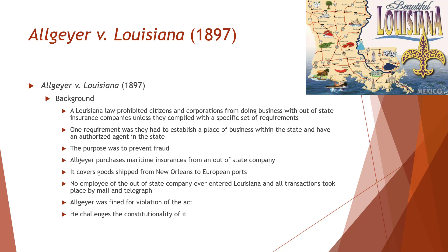Allgaier purchases some maritime insurance from an out-of-state company. It covered goods shipped from the port of New Orleans to European ports. Back then the port of New Orleans was, if you're on the Gulf of Mexico, the port — because it connects you to the Mississippi River. No employee of the out-of-state company ever entered Louisiana, and all the transactions took place by mail and telegraph.